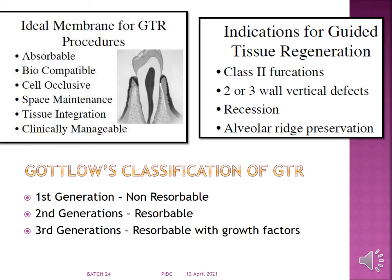The ideal membrane for GTR procedures should be absorbable, biocompatible, cell-occlusive, space-maintaining, tissue-integrating, and clinically manageable. Indications for guided tissue regeneration include classification defects, 2- or 3-wall vertical defects, recession, and alveolar ridge preservation cases.